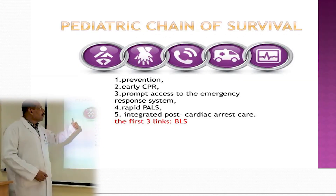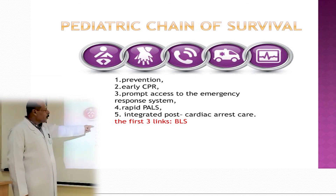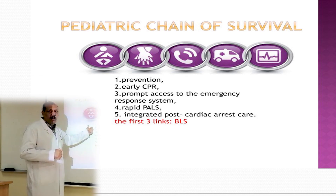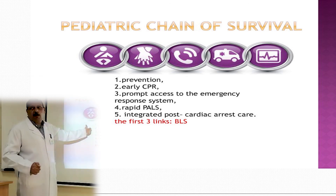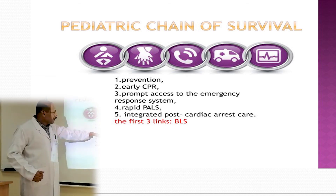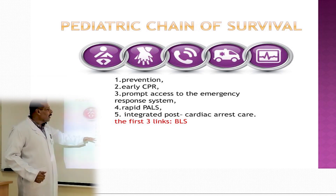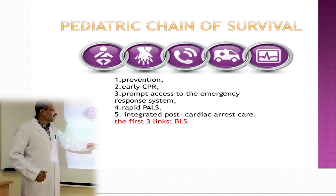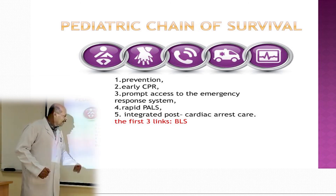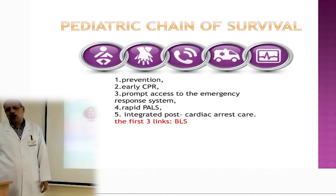For children, the pediatric chain of survival is slightly different. It starts with prevention — the most important step is to prevent the event from occurring — followed by early CPR, prompt access to the emergency response system, rapid basic life support, and integrated post-cardiac arrest care.